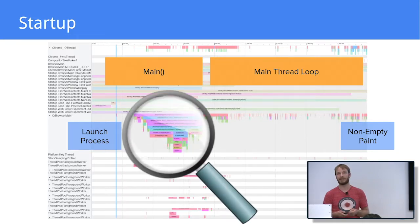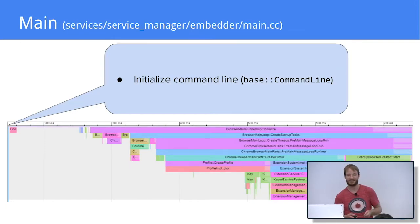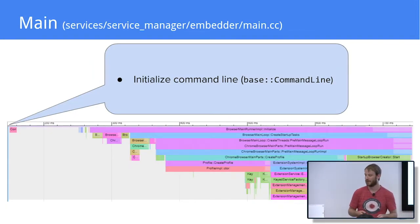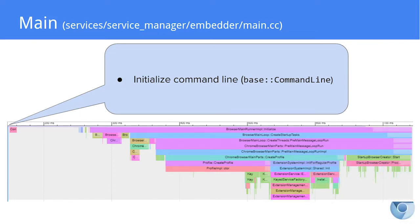Let's zoom into the synchronous initialization part of the main function of Chrome. The first thing we do is to initialize the state needed by the base command line API. There are two reasons for this: almost everything in Chrome depends directly or indirectly on the command line state, and the base command line API can be used from any thread. So we need to initialize its state before we start launching threads that could access it concurrently — otherwise, we get data races.